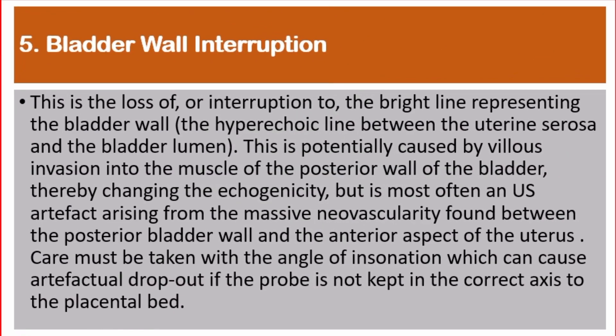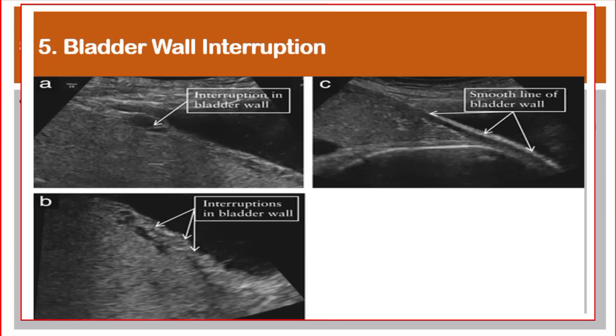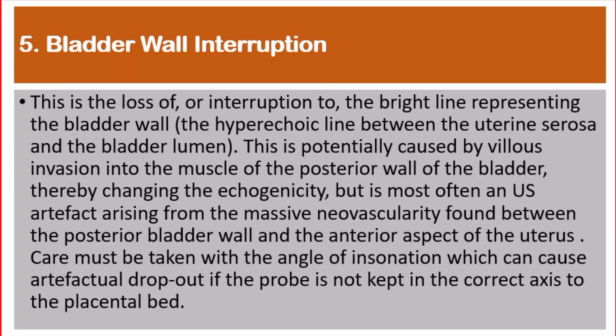Number 5: Bladder wall interruption. This is the loss of or interruption to the bright line representing the bladder wall — the hyperechoic line between the uterine serosa and the bladder lumen. This is potentially caused by villous invasion into the muscle of the posterior wall of the bladder, but is most often an ultrasound artifact arising from the neovascularity found between the posterior wall of the bladder and the anterior aspect of the uterus. Care must be taken with the angle of insonation, which can cause artifactual dropout if the probe is not kept in the correct axis to the placental bed.